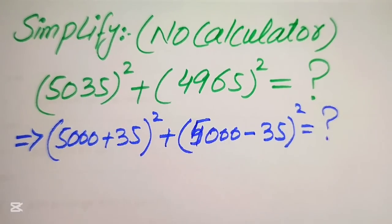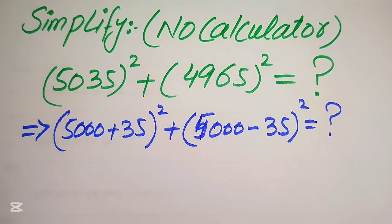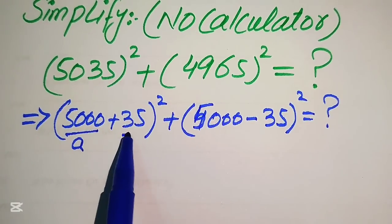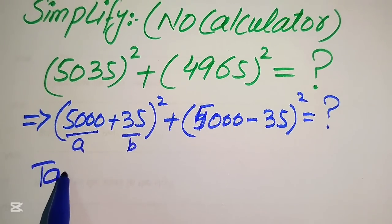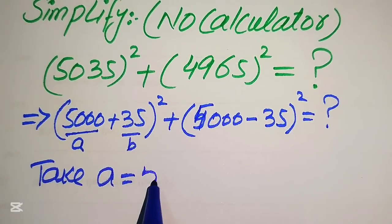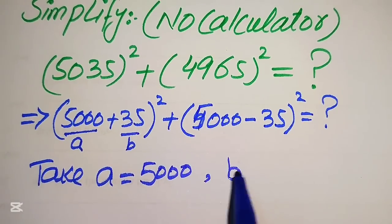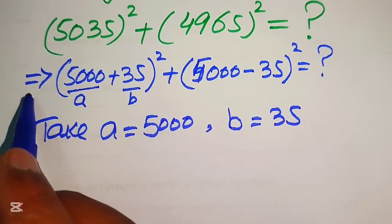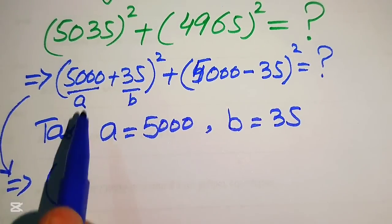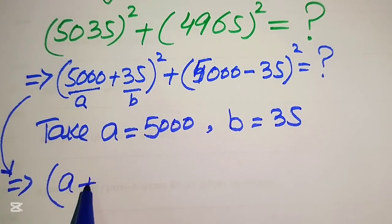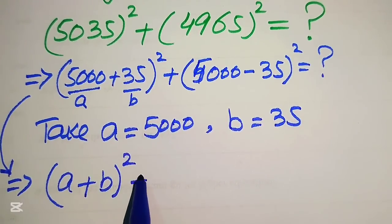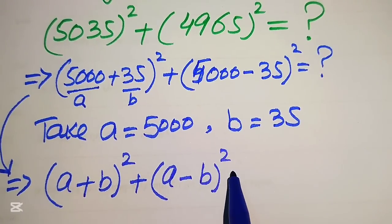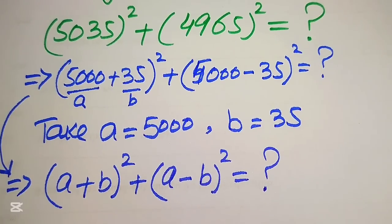In the next step we simplify by substitution. We suppose a equals 5000 and b equals 35. Then the first term becomes (a + b) whole square and the second term becomes (a − b) whole square. Our goal is to find the value of (a+b)² + (a−b)².